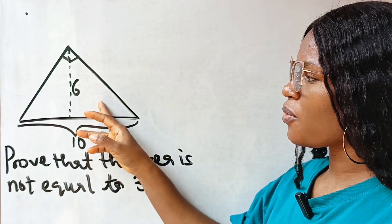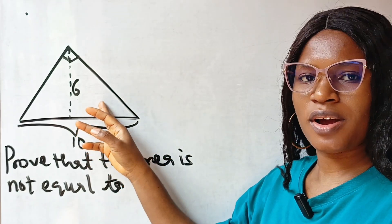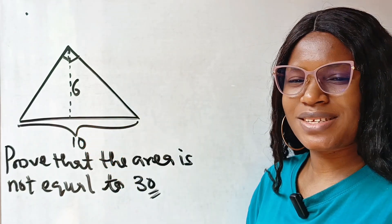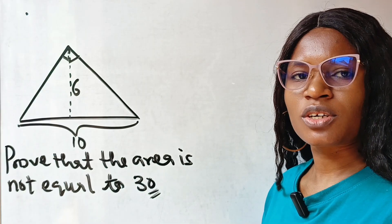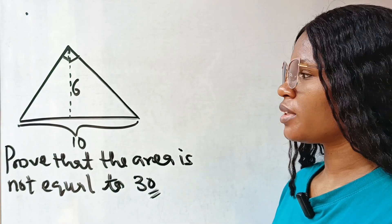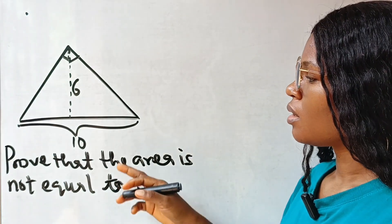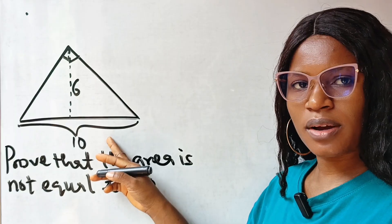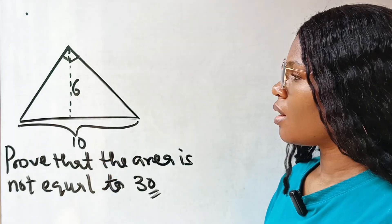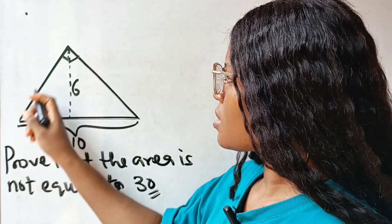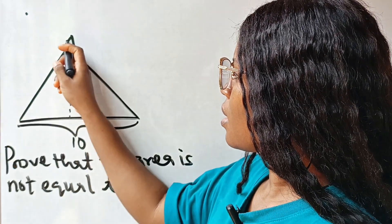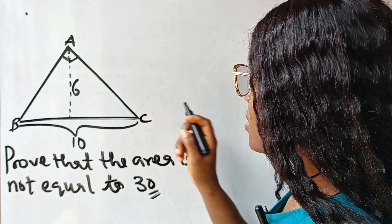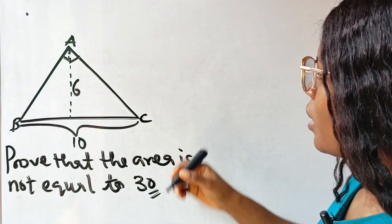Let's prove that the area of this triangle is not equal to 30. First of all, let's solve the area of this triangle. Let's call the vertices A, B, and C.